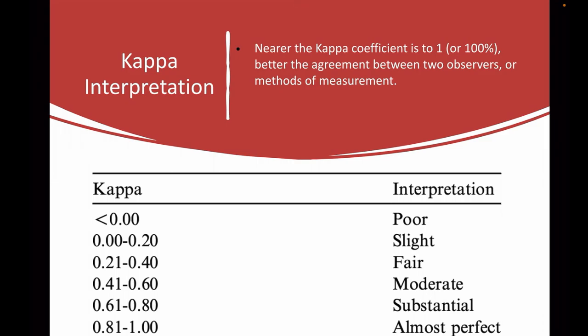How do we interpret kappa values? Kappa values range between −1 and +1. Plus 1 denotes complete agreement — the nearer the kappa coefficient is to 1, the better the agreement between the two observers and the better the reliability. Less than 0 indicates poor inter-rater reliability. 0 to 0.20 is slight agreement; 0.21 to 0.40 is fair agreement; 0.41 to 0.60 is moderate agreement; 0.61 to 0.80 is substantial agreement; and 0.81 to 1 is almost perfect agreement.